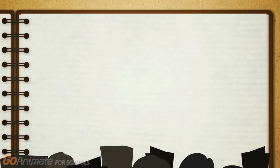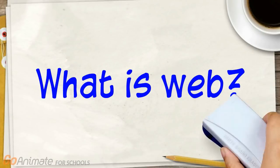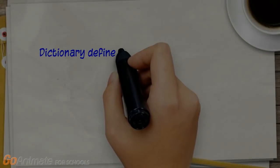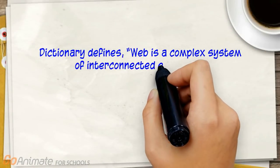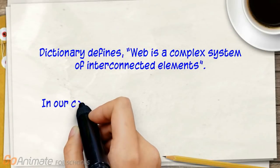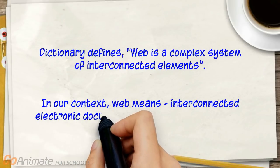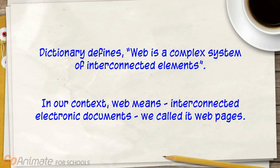We will be happy to help your team. Let's learn what is web. The dictionary defines web as a complex system of interconnected elements. In our context, web means interconnected electronic documents, which we call web pages.